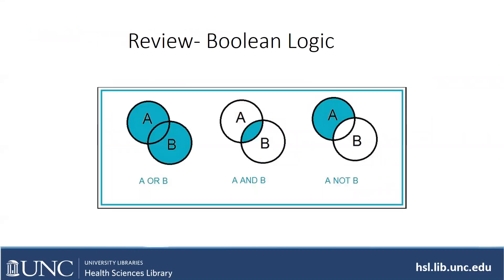Boolean logic is the way we search scholarly databases — that's why you can't type in a full question. If you were trying to find information about cats, you might have 'cats OR felines,' which will broaden your search. If you just put in 'cats,' you might miss articles that refer to 'felines' and vice versa. If you wanted information about cats or felines that have distemper, you might do 'felines AND distemper' — that narrows your search because all the articles about felines also have to cover distemper.